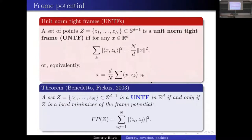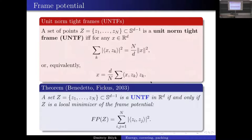There is a result of Benedetto and Fickus from several years ago which says that if you consider the energy where you take the inner product between vectors squared — the so-called frame potential — then any local minimizer of this energy is a unit norm tight frame. This is an if-and-only-if statement; some parts are easy, and I'll show you part of the proof on the next slide.